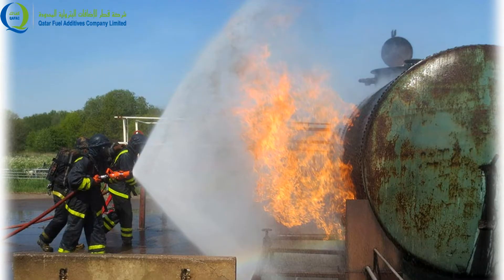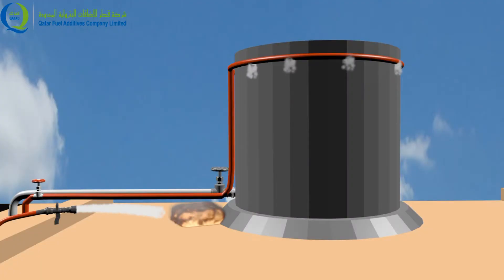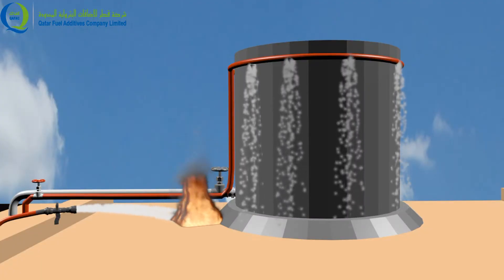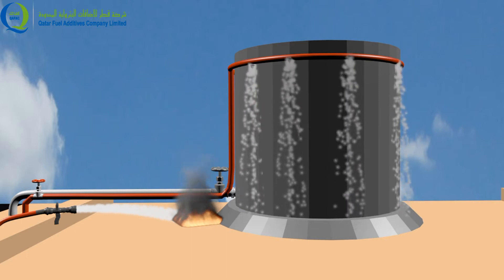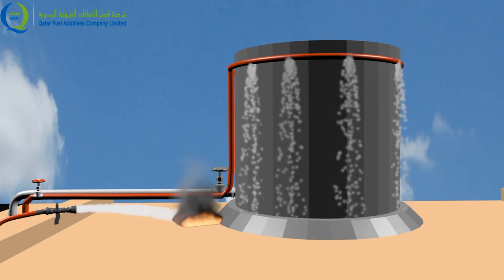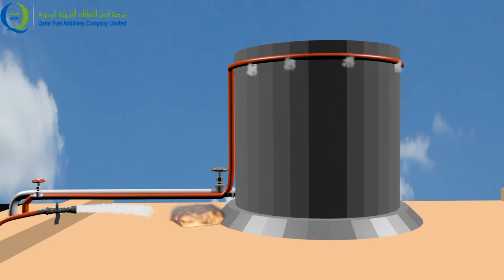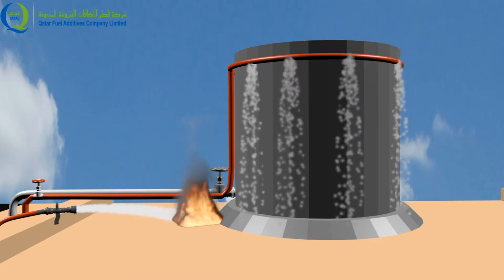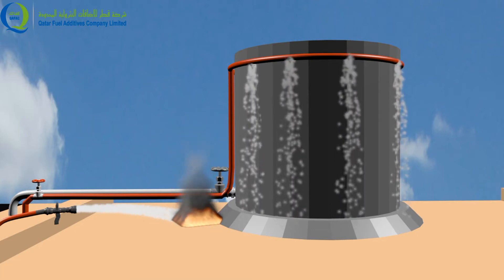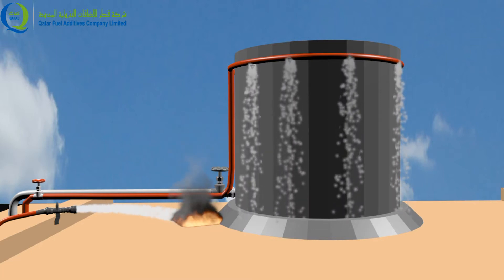If isolation of the local valve is difficult, use a water shield to access the valve, or first suppress the fire with foam followed by isolating the valve. Apply firefighting foam from local foam hydrants to the pool fire to suppress the fire and vapors.